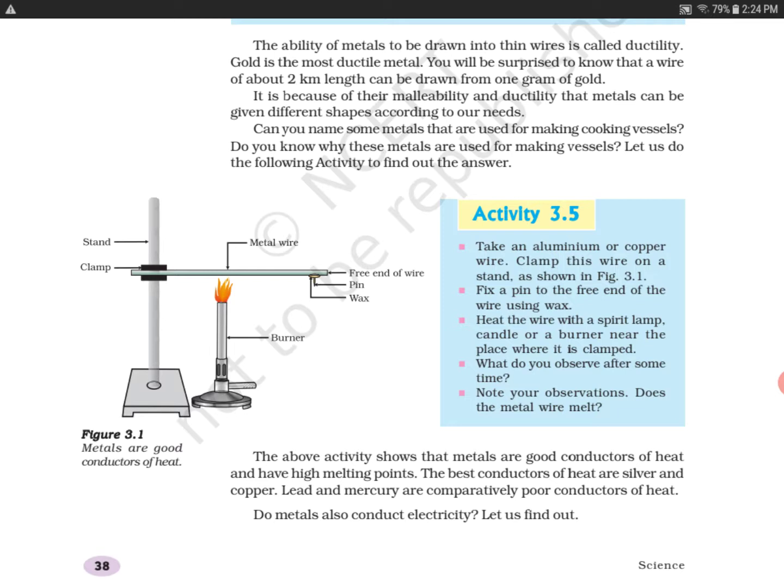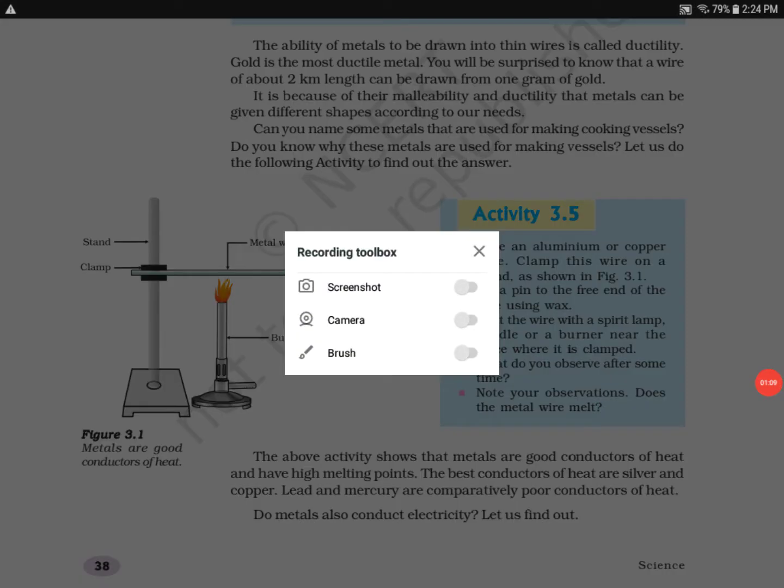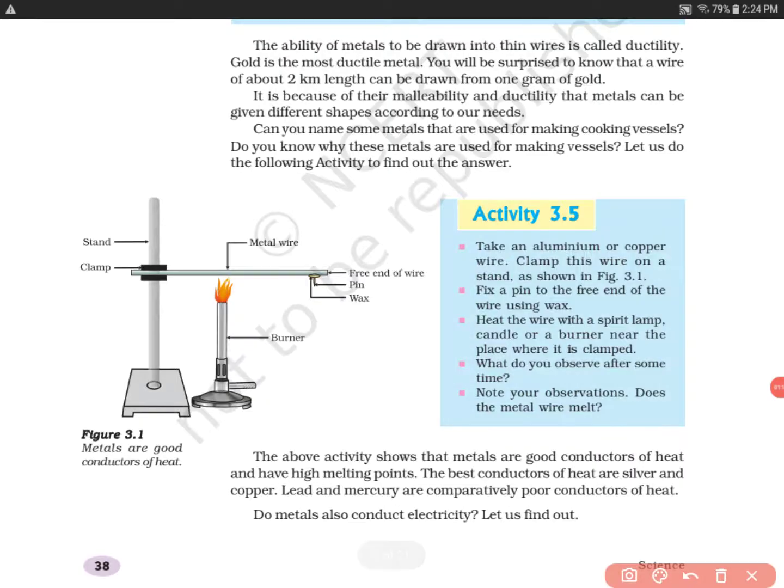So let's go through this activity 3.5. In this activity, you are supposed to take an aluminum or copper wire. Just like you can see this picture, you need to take the aluminum or copper wire. Now clamp this wire on a stand as shown in Figure 3.1.